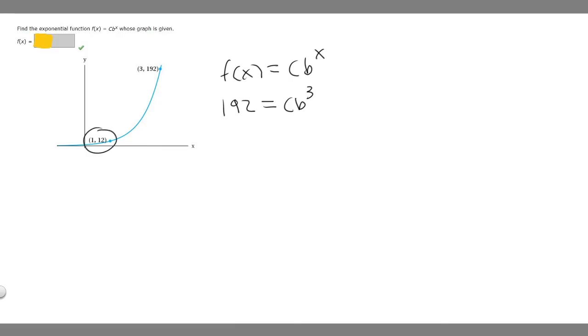We do the same thing with the other point. 12 = c*b^1. Now that we've got our two equations, we're going to use the elimination method to find the b value by dividing these two numbers and subtracting the exponents.